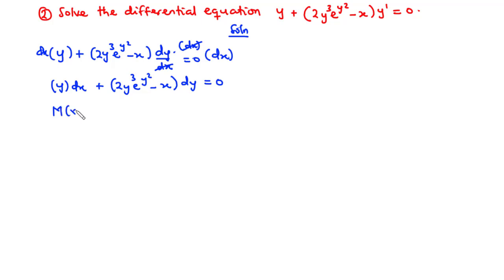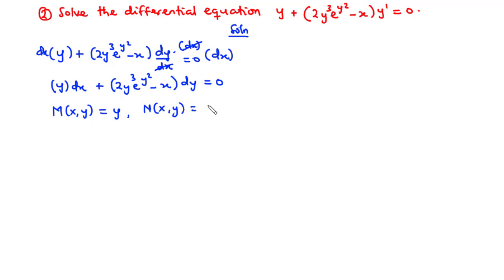Now we identify M(x,y) equals y, and N(x,y) equals 2y³ e to the power y² minus x.